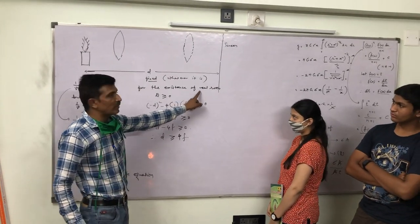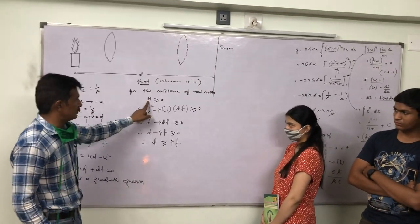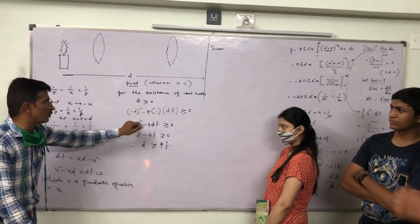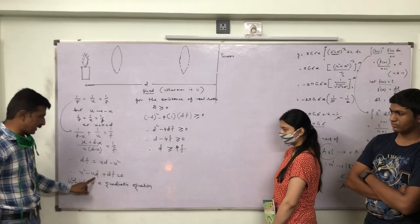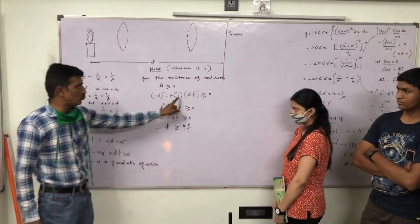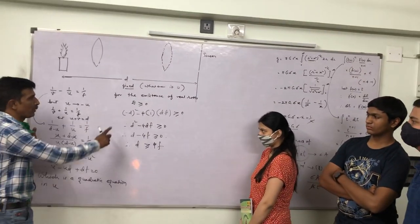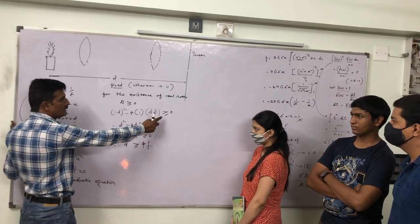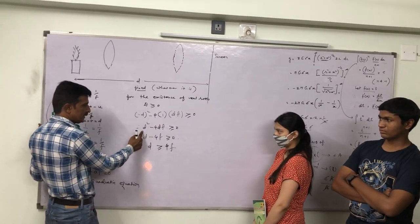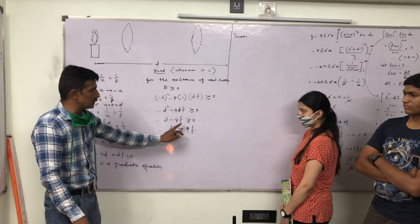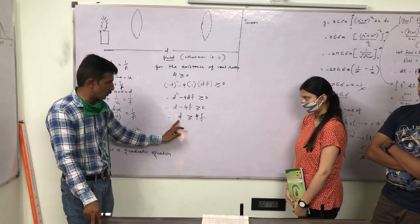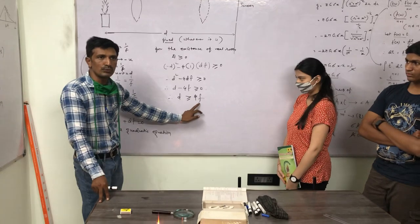For the existence of real roots, the discriminant should be greater than or equal to zero. So from b² - 4ac, where b is -D, a is 1, and c is DF: (-D)² - 4DF ≥ 0. That is, D² - 4DF ≥ 0. So D(D - 4F) ≥ 0, which means D ≥ 4F.